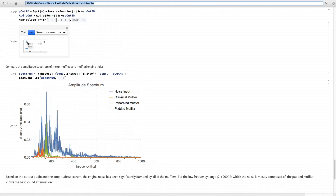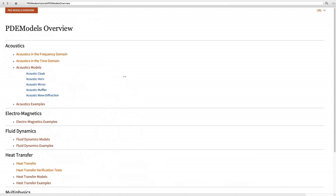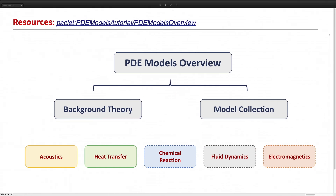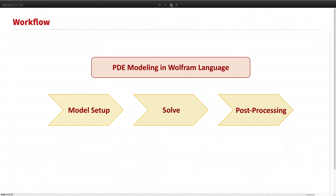Let's go back to the slides. To do PDE modeling in the Wolfram language, there are three major steps. The first step is to set up our PDE model. Then we solve it numerically using NDSolve. Once we have the result, we can do some post-processing like animation and analysis.